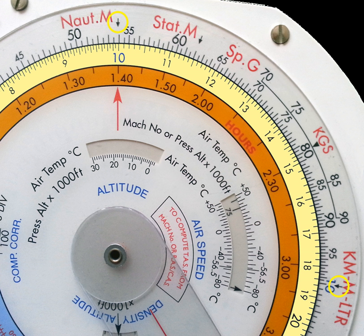Step 1: Set wind direction under true index. Step 2: Mark wind velocity up from center point. Step 3: Set true course under true index.